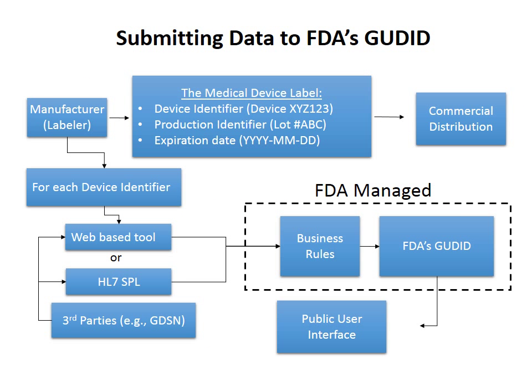Moving on to slide 7 — a very high-level overview of GUDID. The entire UDI is a device identifier and a production identifier, and the database does not collect production identifiers. So there are no lot numbers or serial numbers submitted to the database. But for each device identifier, or static portion of the UDI, there is a set of data that needs to be submitted.